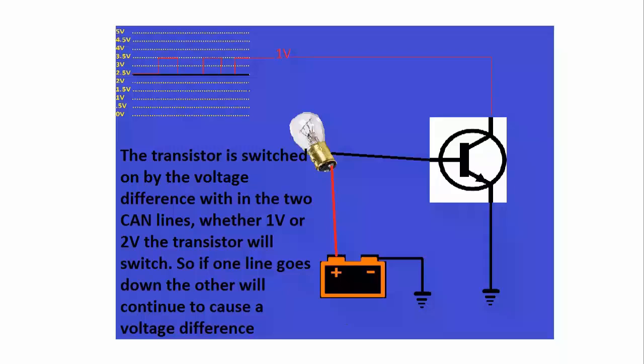And this is high enough voltage for the transistor to turn on and for the bulb then to return to earth and light up. Let's just say we have a CAN line down, as is in the example we have here, where we now only have 1 volt difference between the 2 CAN lines. But it is still enough voltage to turn the transistor on.